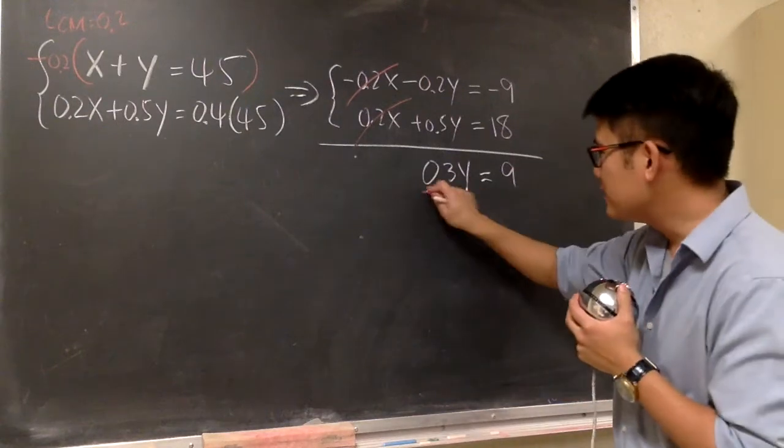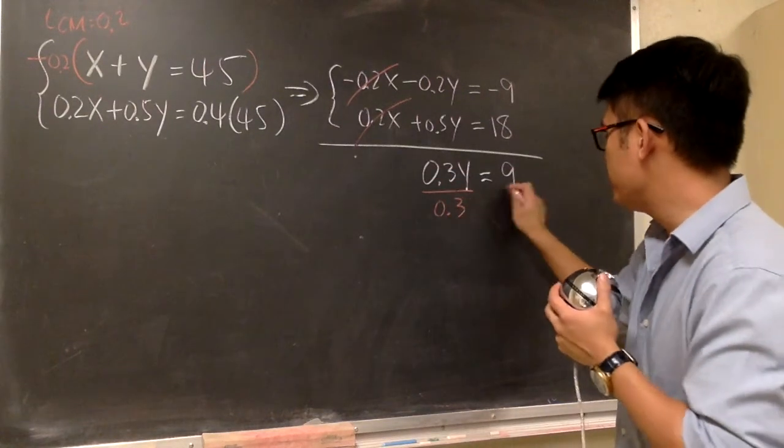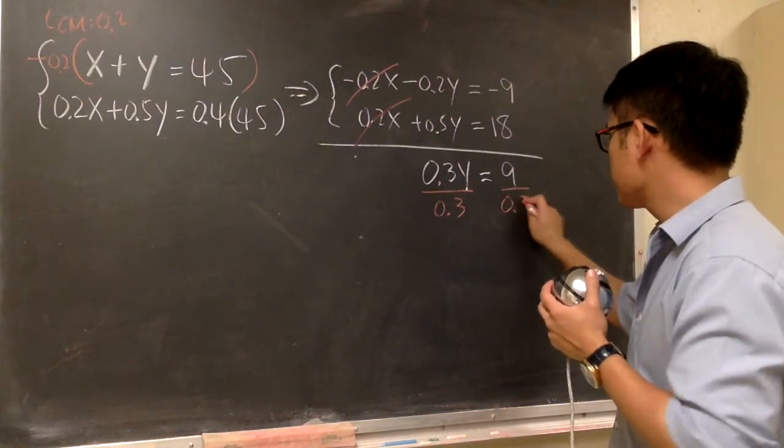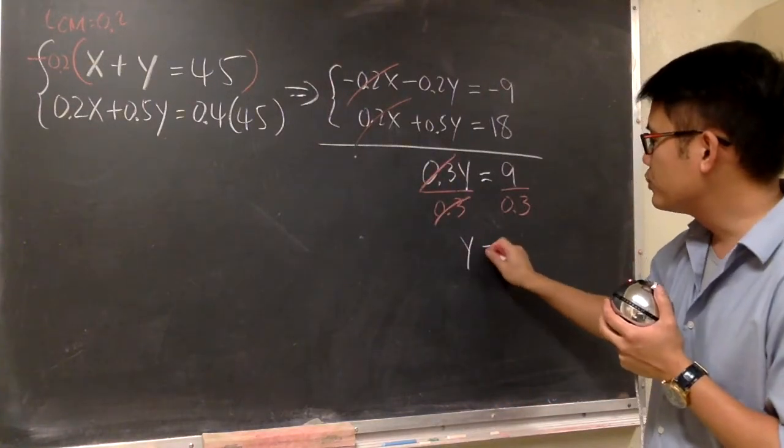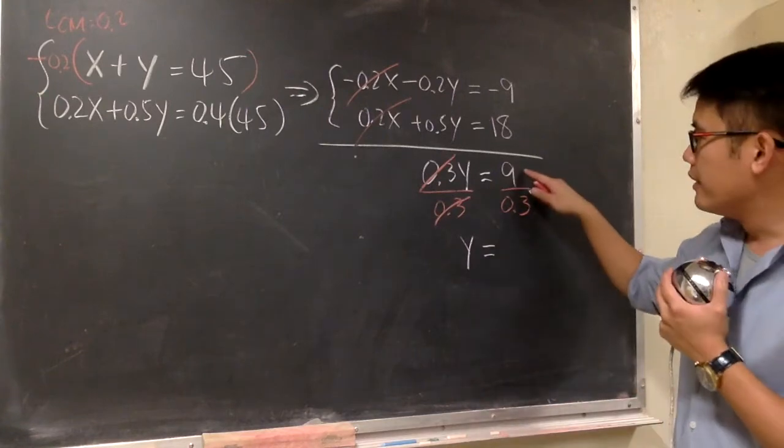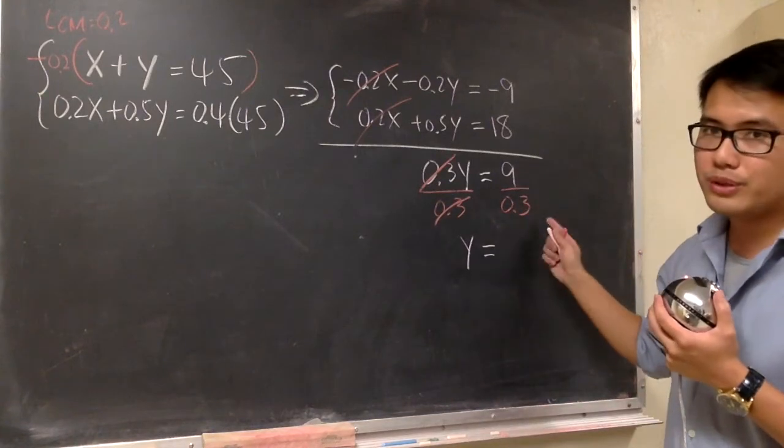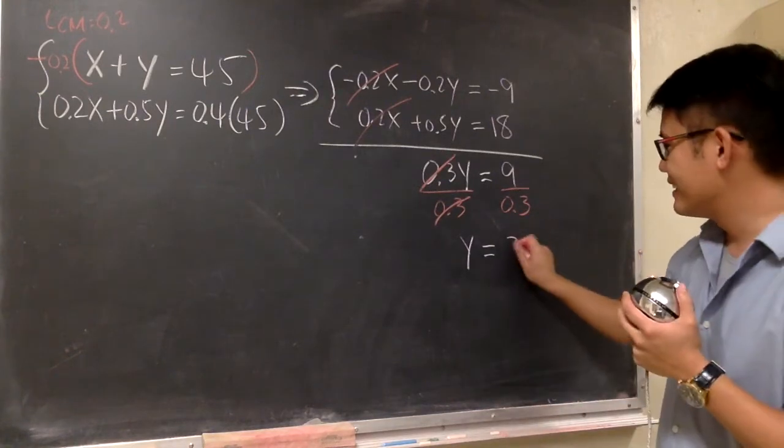And then, let's divide both sides by 0.3. So, this and that will cancel, and we get y by itself. And this will give us 9 over 0.3, so we get 30.